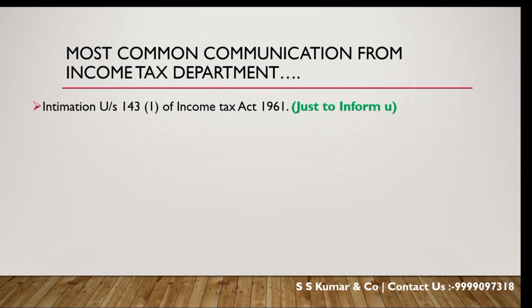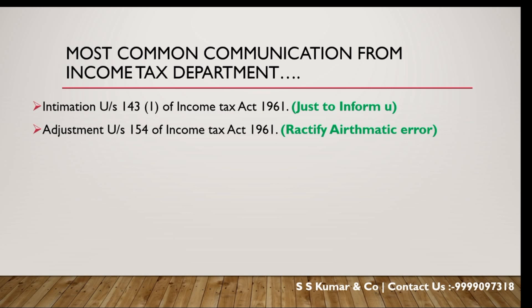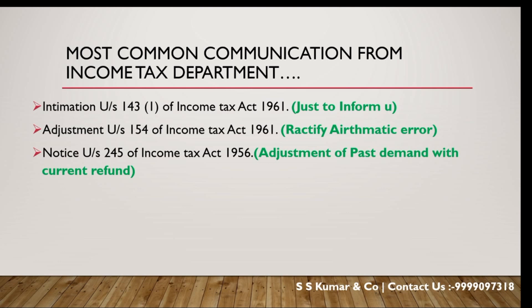Most income tax filings involve Section 154 — if during the processing of your return, the department finds an arithmetic error, they will send a notice under Section 154 for adjustment. If you do not reply, the adjustment may be made. The second type is a notice under Section 245, which relates to adjusting a past demand against your current refund. Suppose a past year demand exists — you normally receive this notice, and if you agree, you don't need to reply.